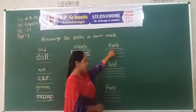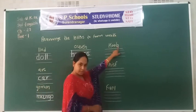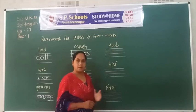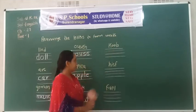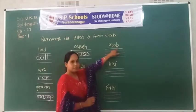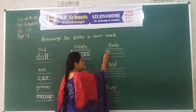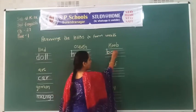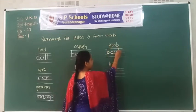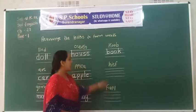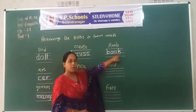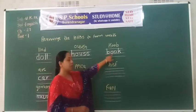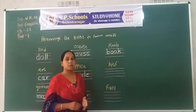Next one: K, O, B. The correct word — B, O, O, K. Book! B, O, O, K. Book! B, O, O, K. Book.